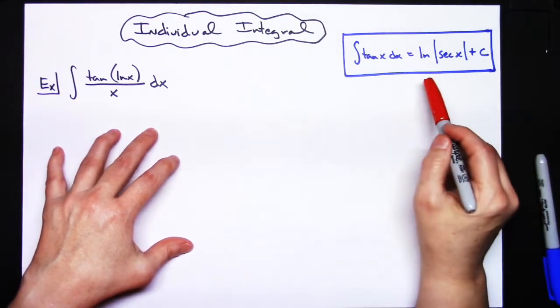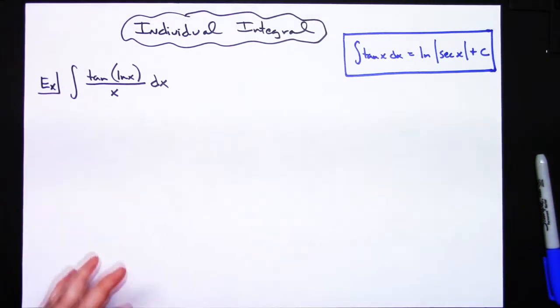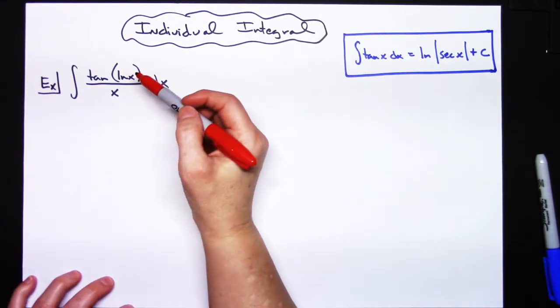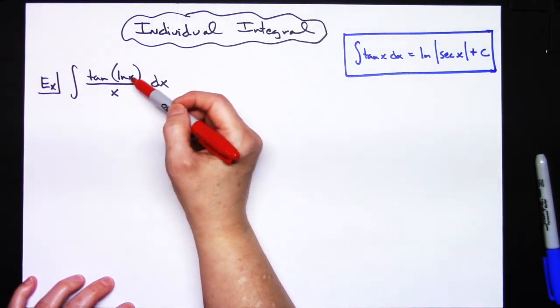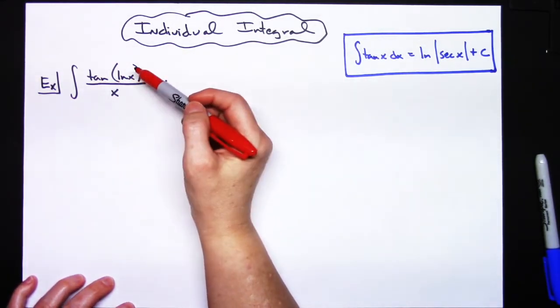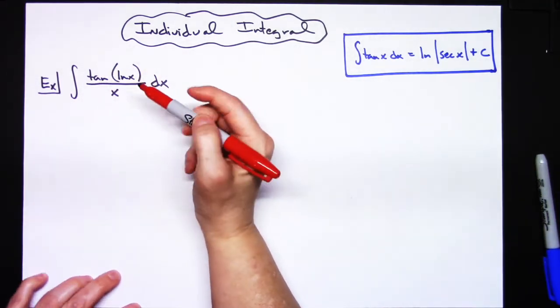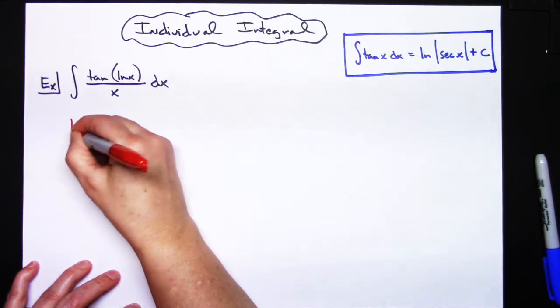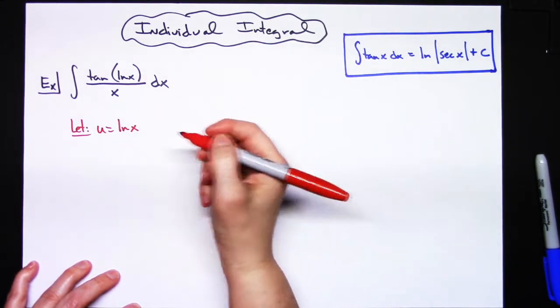Alright, if that's memorized this integral is a whole lot shorter. Okay, so we're going to start here letting u be our inside function. In that numerator we've got the tangent of the natural log of x, so I have a composite function just in the numerator. This is the inside function, tangent is the outside function, so I'm going to let my u be natural log of x.